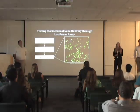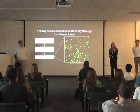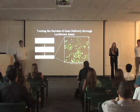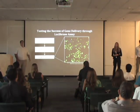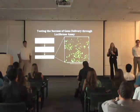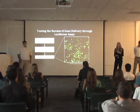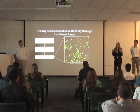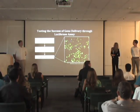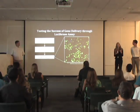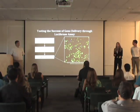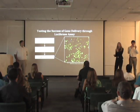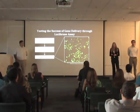In order to measure how effective these three different types of delivery vehicles are at delivering a given gene to our cells, we use what is called a luciferase assay. Luciferase is a gene found in fireflies that, when expressed, produces a protein called luciferase that emits a fluorescent light. We have taken this luciferase gene and inserted it into our delivery vehicles, which we then transferred into our cells.